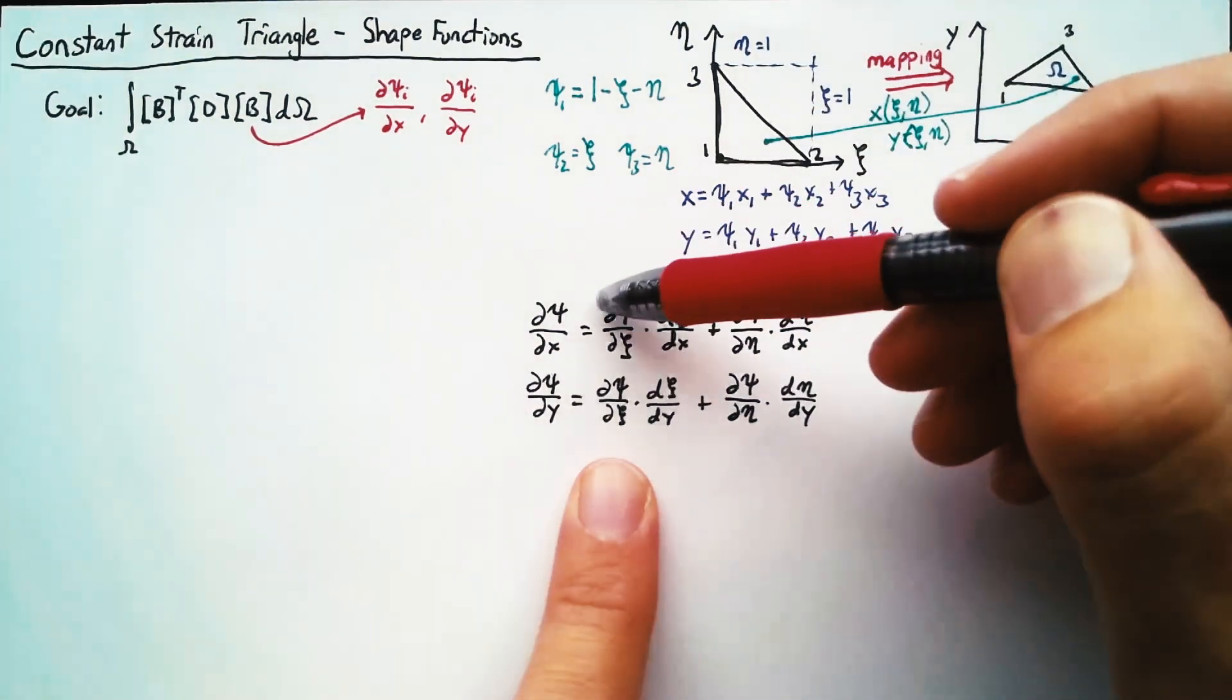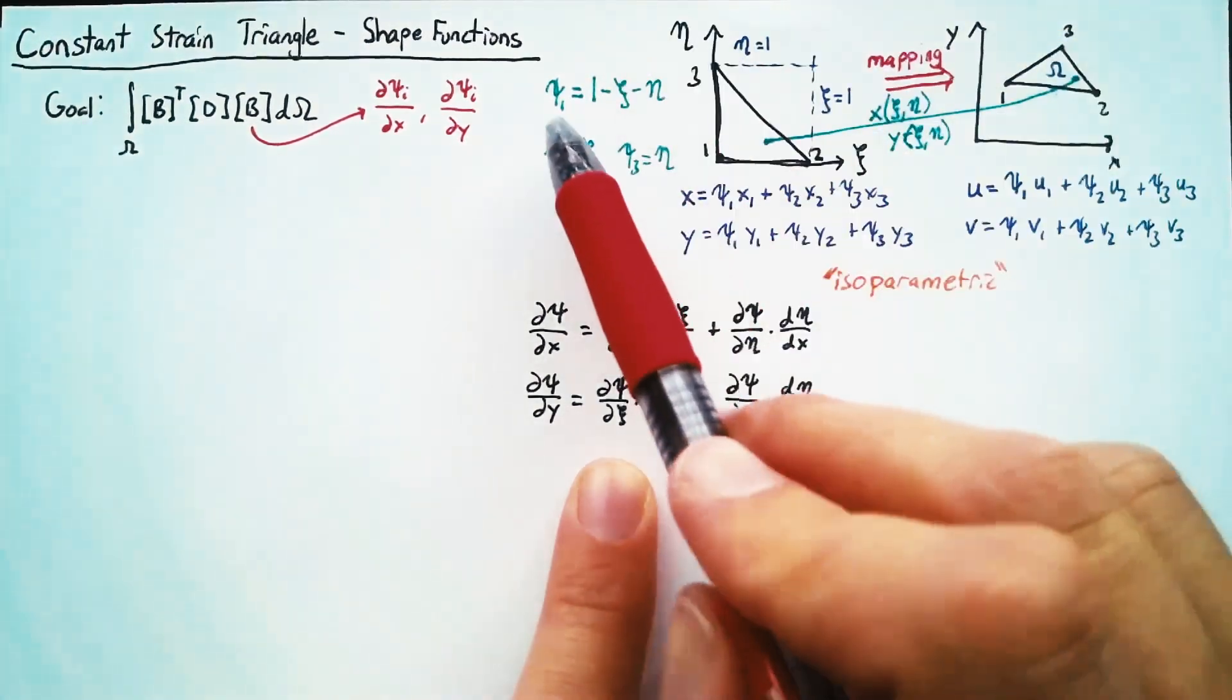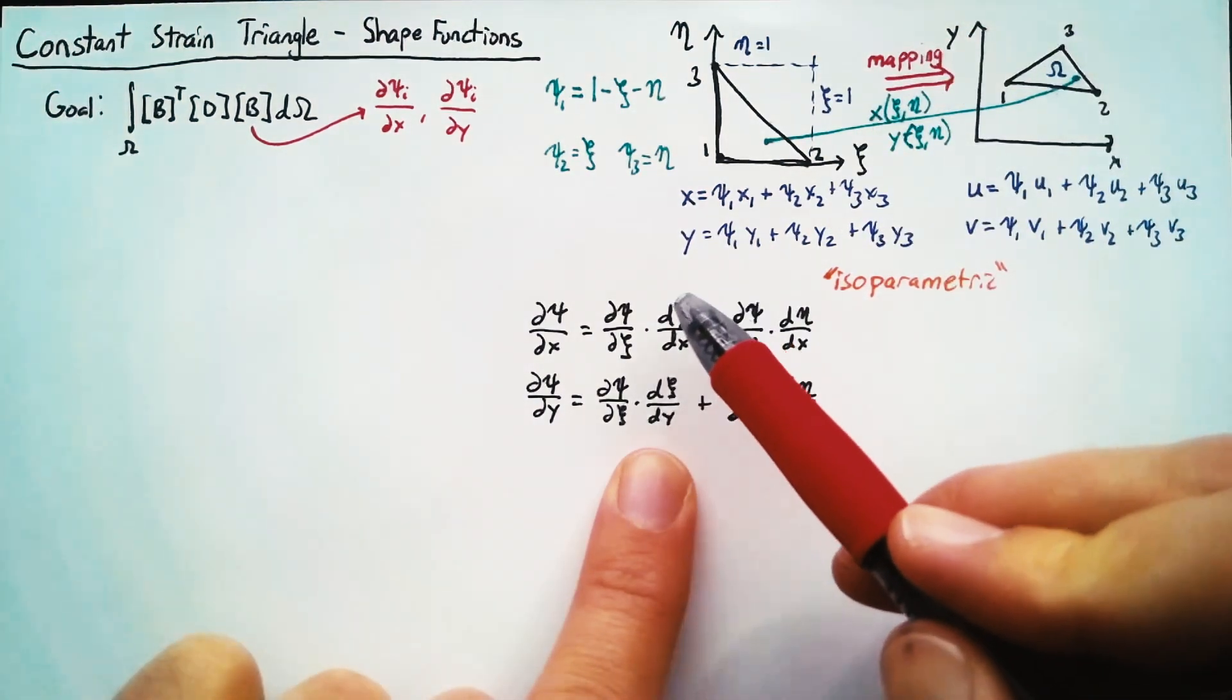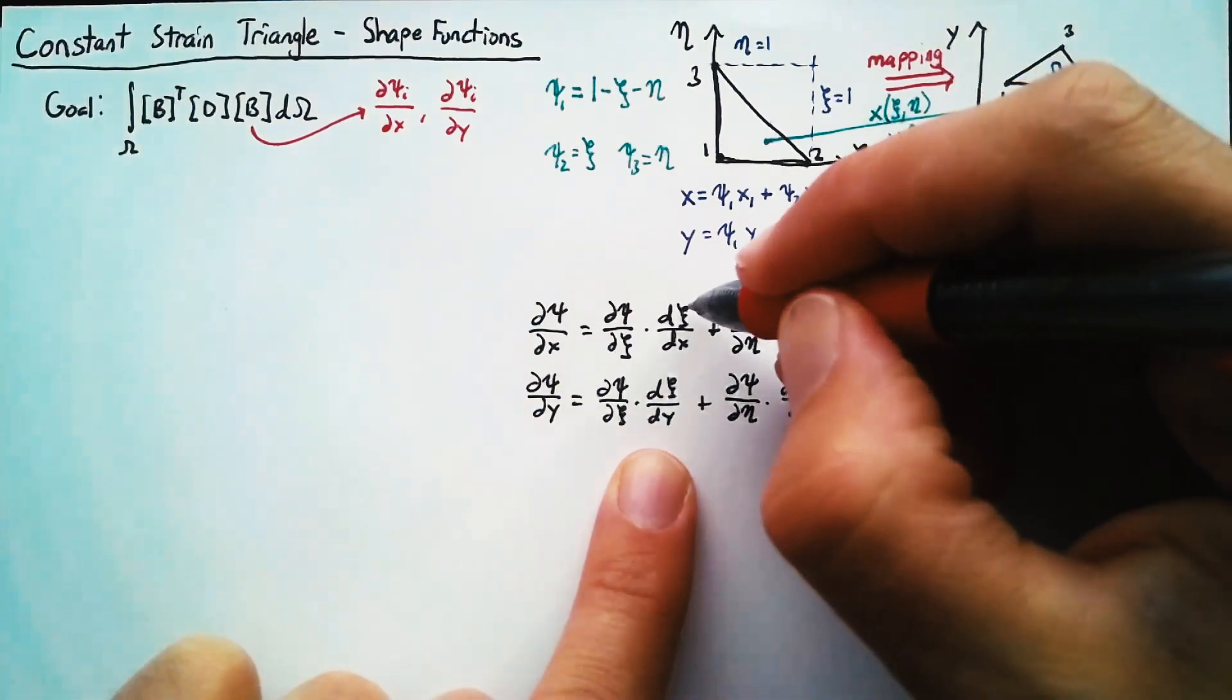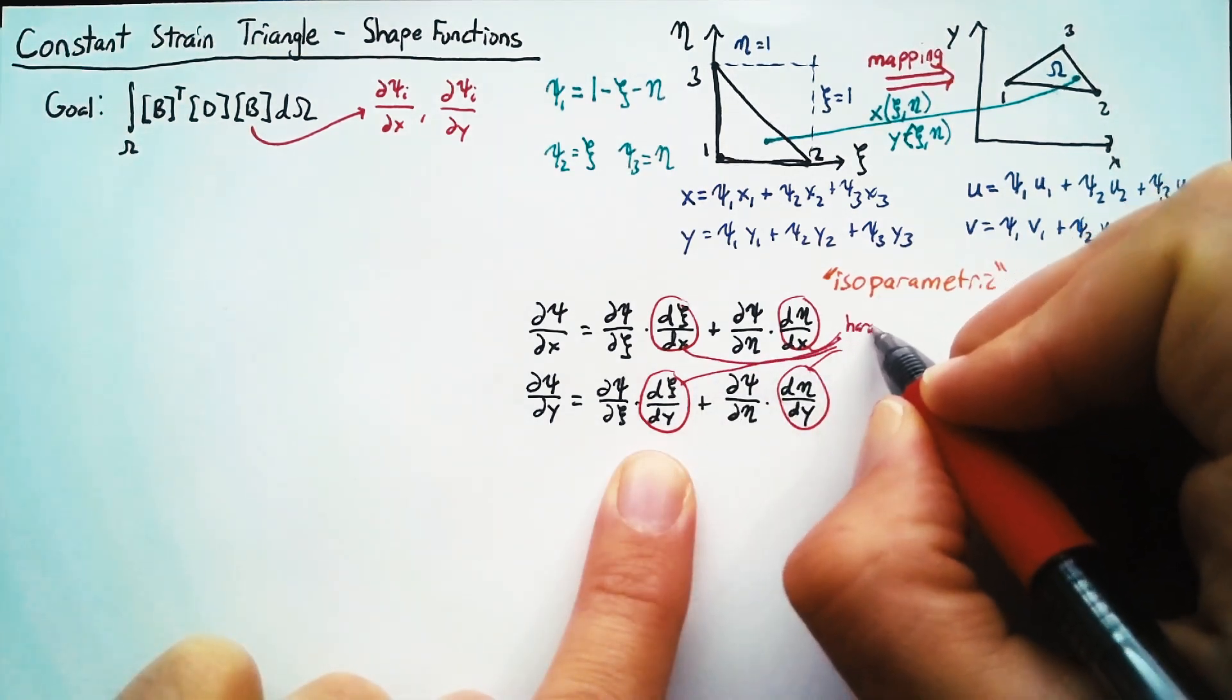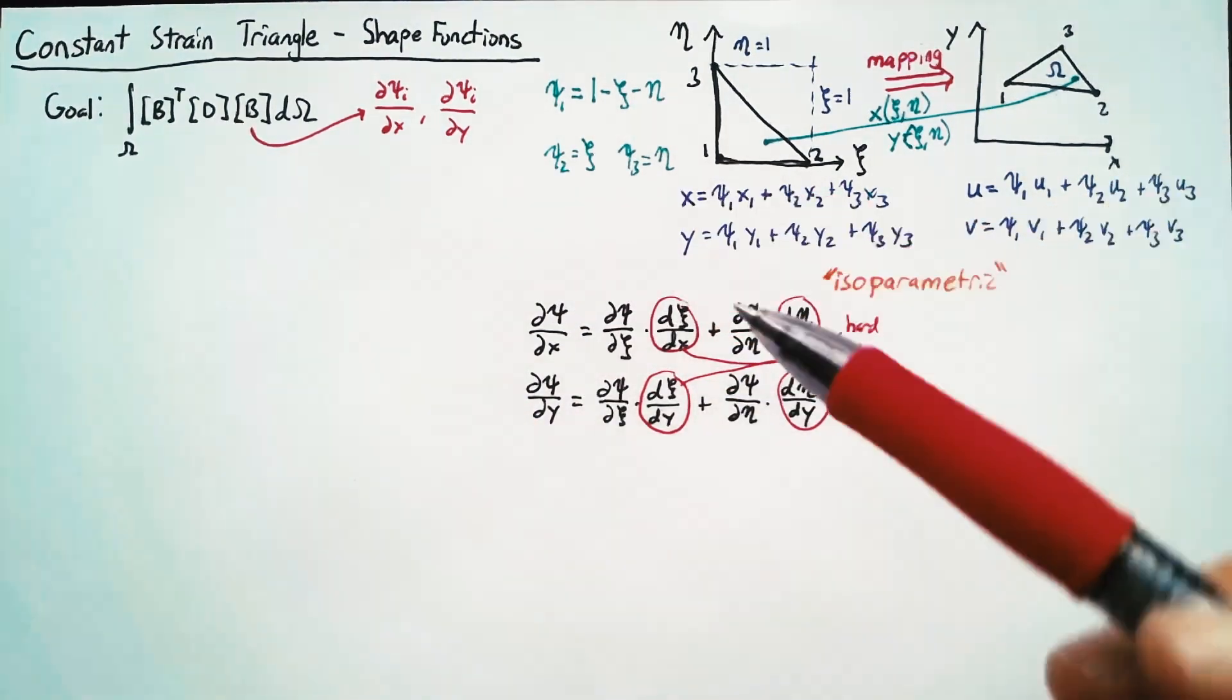So these dPsi/dC and dPsi/deta terms are really easy to calculate, right? That's almost trivial. Unfortunately, the dC/dx term is almost impossible to calculate. So these four are very hard to find.